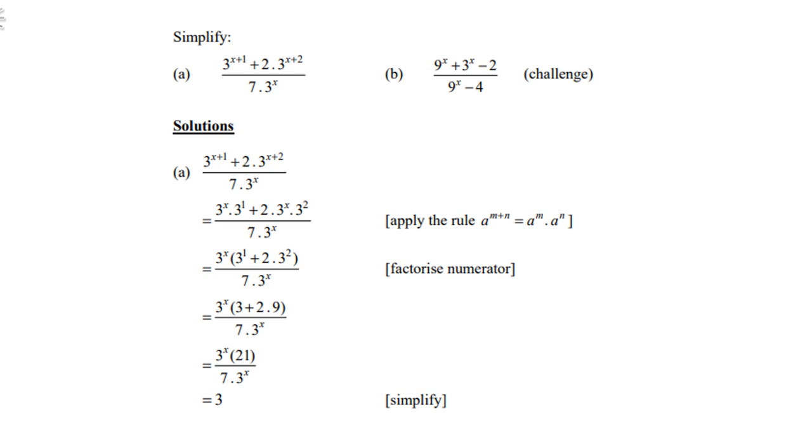Now we can clearly see that the common factor is 3 to the power x. So what is left is 3 to the power 1 plus 2 times 3 to the power of 2. Then the 3 to the power x in the numerator and the denominator can cancel. And we're left with 3 plus 2 times 9, which is 21. And 7 to 21, 3 times.